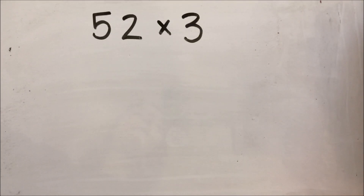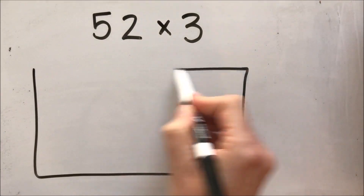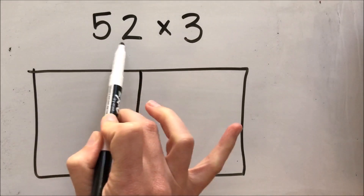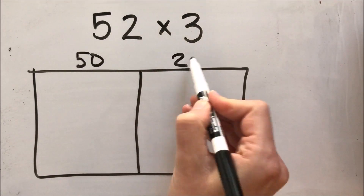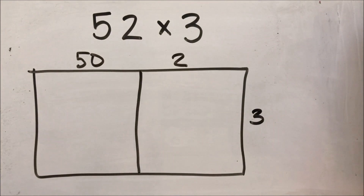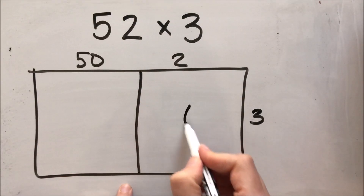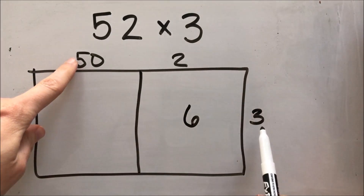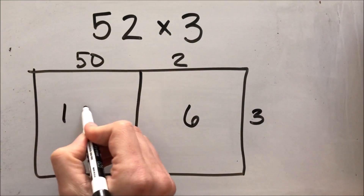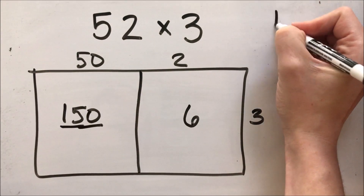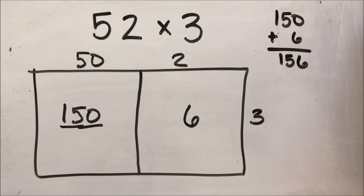I'm again going to use the box method, this time to show you what happens when I know my math facts and how much easier that makes solving this problem. I've drawn my box and I'm going to split up 52 — in expanded form that's 50 plus 2 — and I'm multiplying by 3. I've practiced my math facts a lot, so I don't have to draw a picture of 2 times 3. I just know 2 times 3 equals 6. I also know 3 times 50 because I know 3 times 5 equals 15, and if I have 15 tens that's 150. Then I add up 150 plus 6, and I know 150 plus 6 is 156.